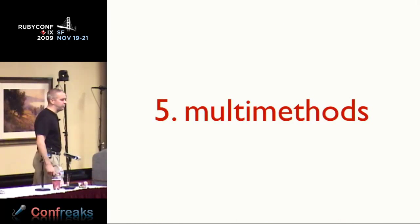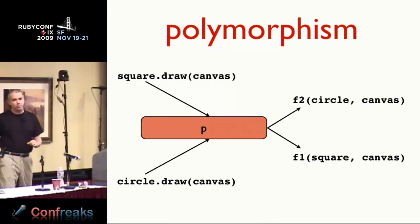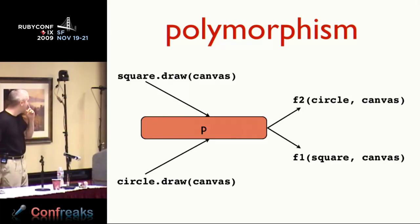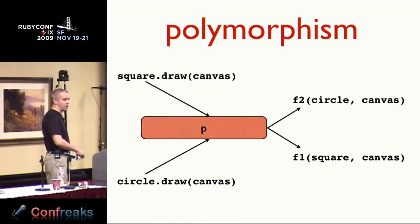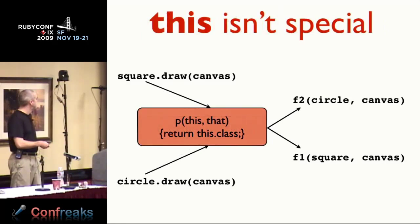The fifth thing Clojure provides is multi-methods — a generalization of polymorphism. Polymorphism is: I want to say square.draw or circle.draw and a magic black box decides which implementation to call based on the type. But if you're a functional programmer, that black box is really just a function that says 'tell me the class of this and make decisions based on that.' That function could really be any function — a function of all the arguments. This one implements simple polymorphism, but I could make my dispatch function a function of two arguments and dispatch on square-for-canvas differently from square-for-surface.